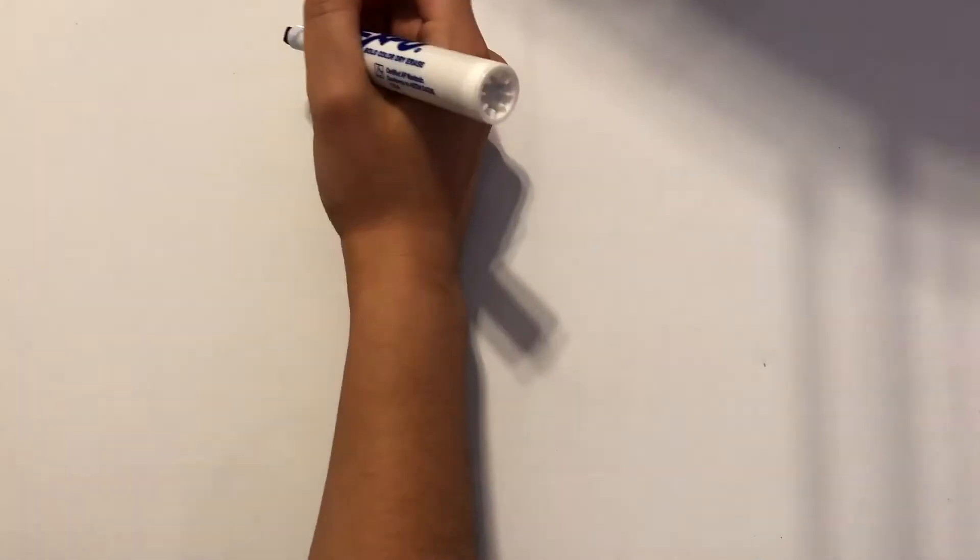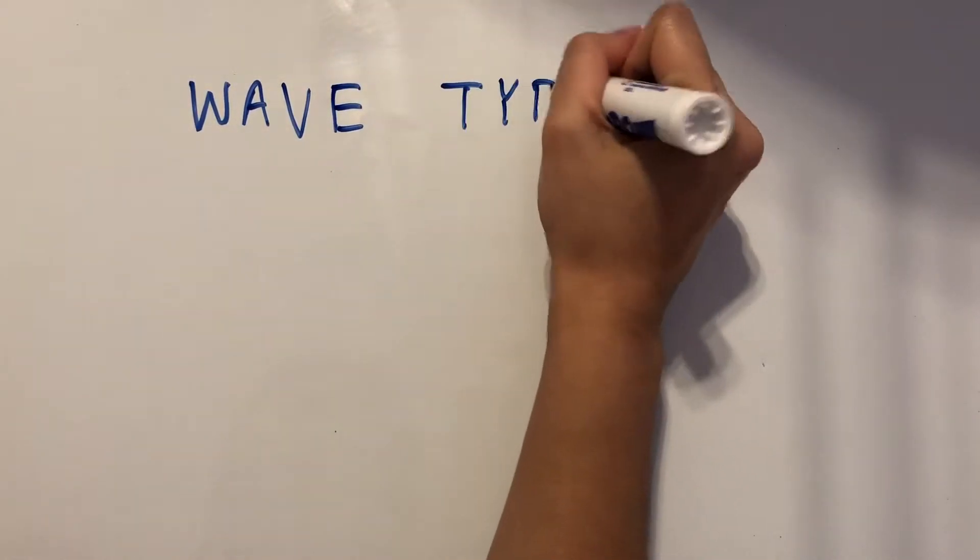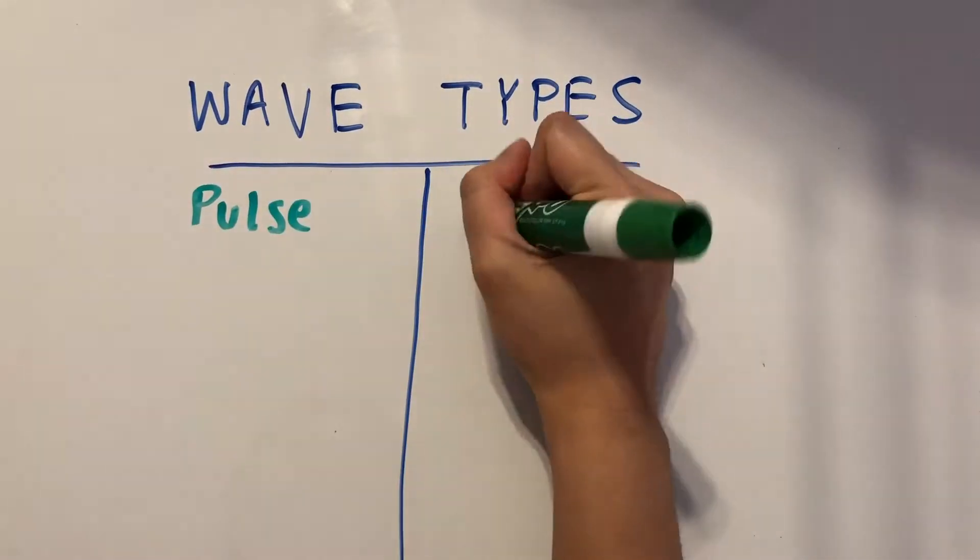There are many types of waves that differ by the way they move, their amplitudes, the medium they're traveling through, and other features as well. First up, we'll look at pulse versus periodic waves.